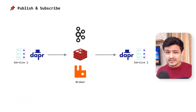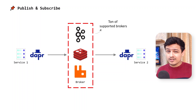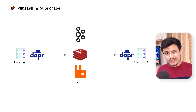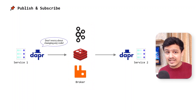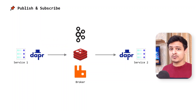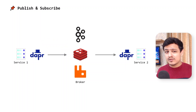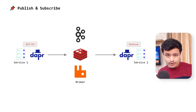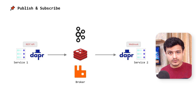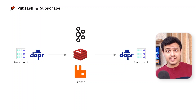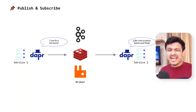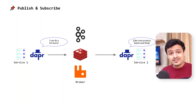Dapr helps us out here as well. First, it has integrated with a ton of brokers and exposed them via a standardized API. In other words, you can now swap out your broker without changing a single line of code. Next, its API is completely REST-based, including the subscription model. Publishing is as simple as calling a REST endpoint. Subscription is similar — Dapr will invoke an API on your app whenever there's a message for you. Dapr also allows you to limit the max concurrency your app can handle, and it supports dead letter queues even though the underlying broker doesn't.